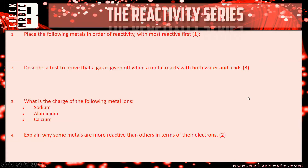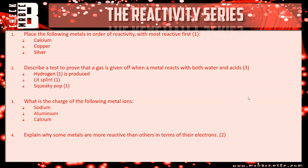Let's see how you've done. Question one: place the metals in order of reactivity. The most reactive was calcium, then copper, then silver. If you had that in the correct order, give yourself one mark. Question two: describe a test to prove that a gas is given off. Any time you react a metal with an acid you get hydrogen — one mark for that. Lit splint, squeaky pop for your other two marks.